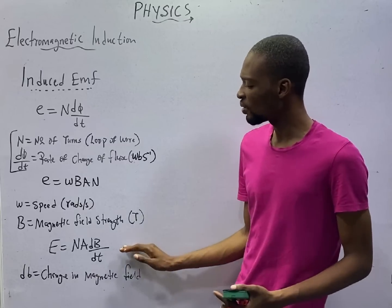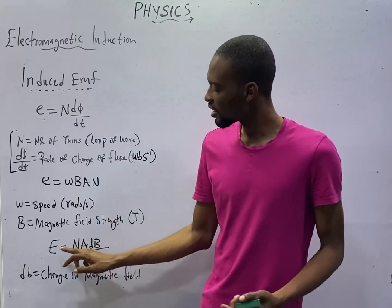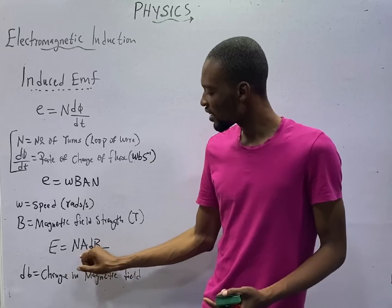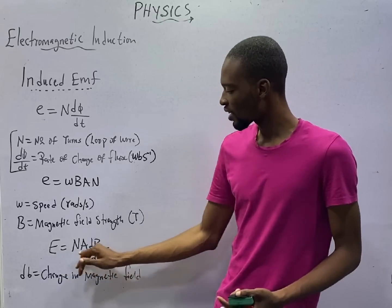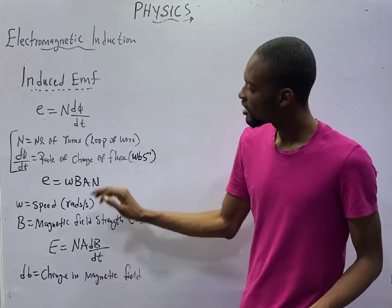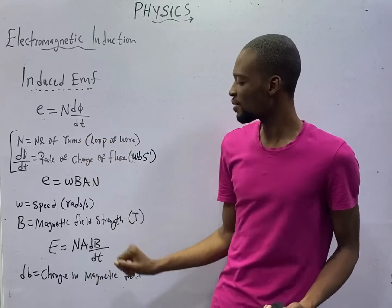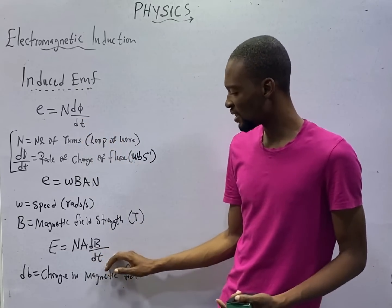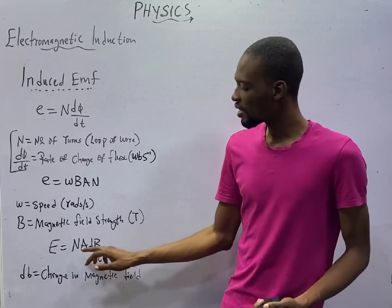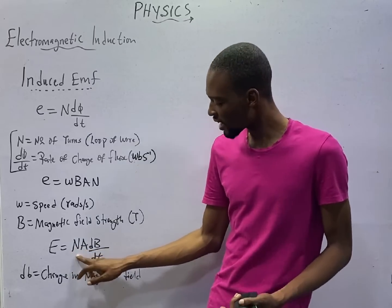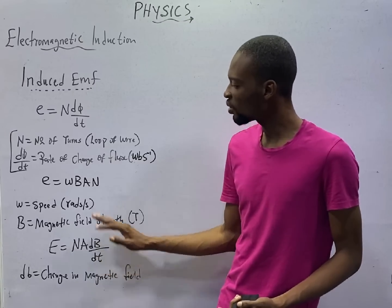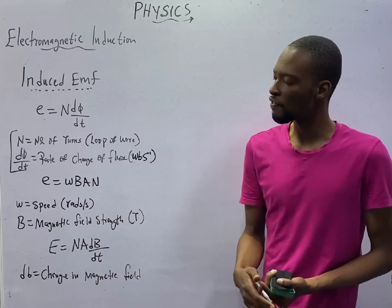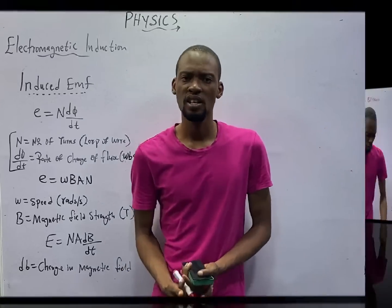The third formula you can use to calculate induced EMF is E = NAdB/dt. Change in flux with time is AdB/dt. Which means number of turns times area times the change in magnetic field with time. No longer the rate of change of flux.